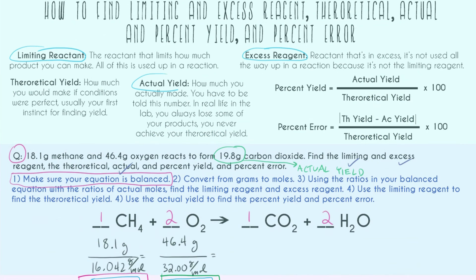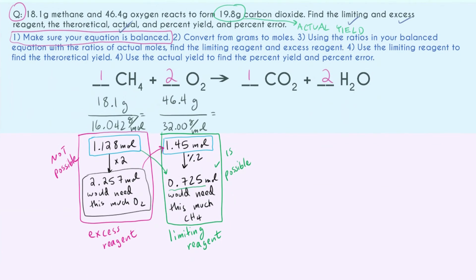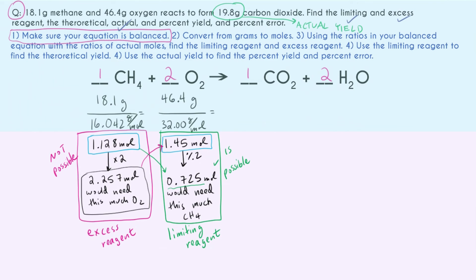So looking again at the definitions of these: actual yield—how much you actually made. You have to be told this number. In real life in the lab, you always lose some of your products; you never achieve your theoretical yield. And theoretical yield—how much you would make if conditions were perfect. And this is usually your first instinct for finding yield. It's usually what students think of as what yield is. It's like, oh, how much could you make? That's your yield. So let's go ahead and do that. So we use our limiting reagent, and because we were given the actual yield for carbon dioxide, let's just go ahead and calculate the theoretical yield for carbon dioxide. Why do the actual work for ourselves? So the ratio between the limiting reagent and carbon dioxide is two to one.